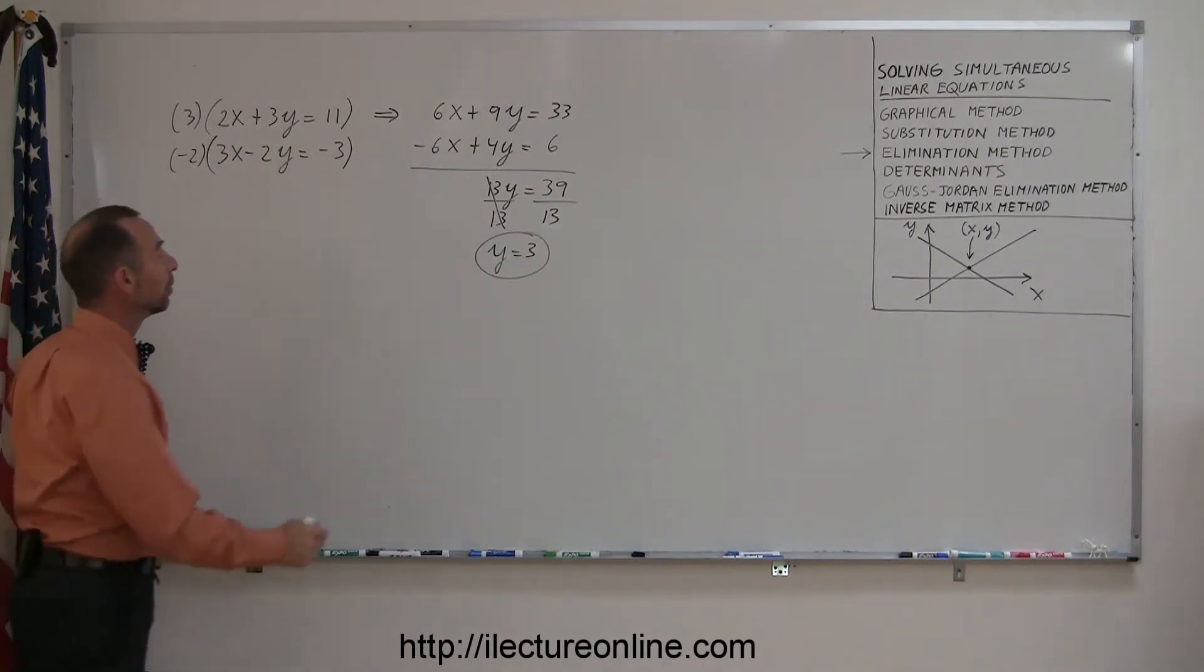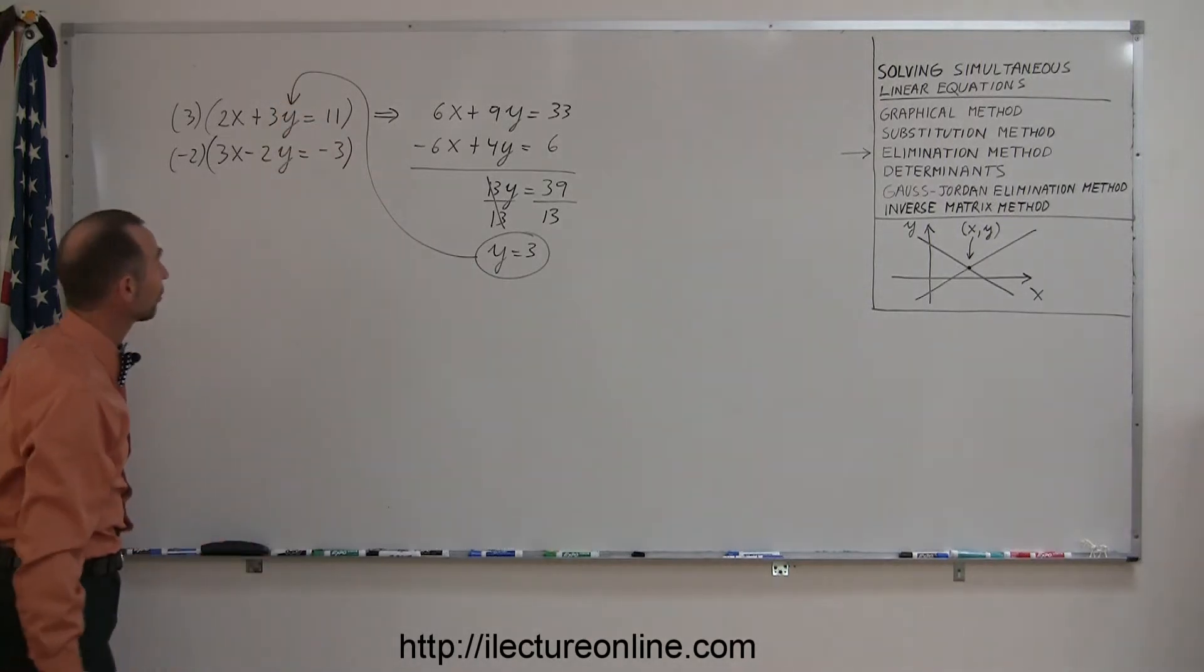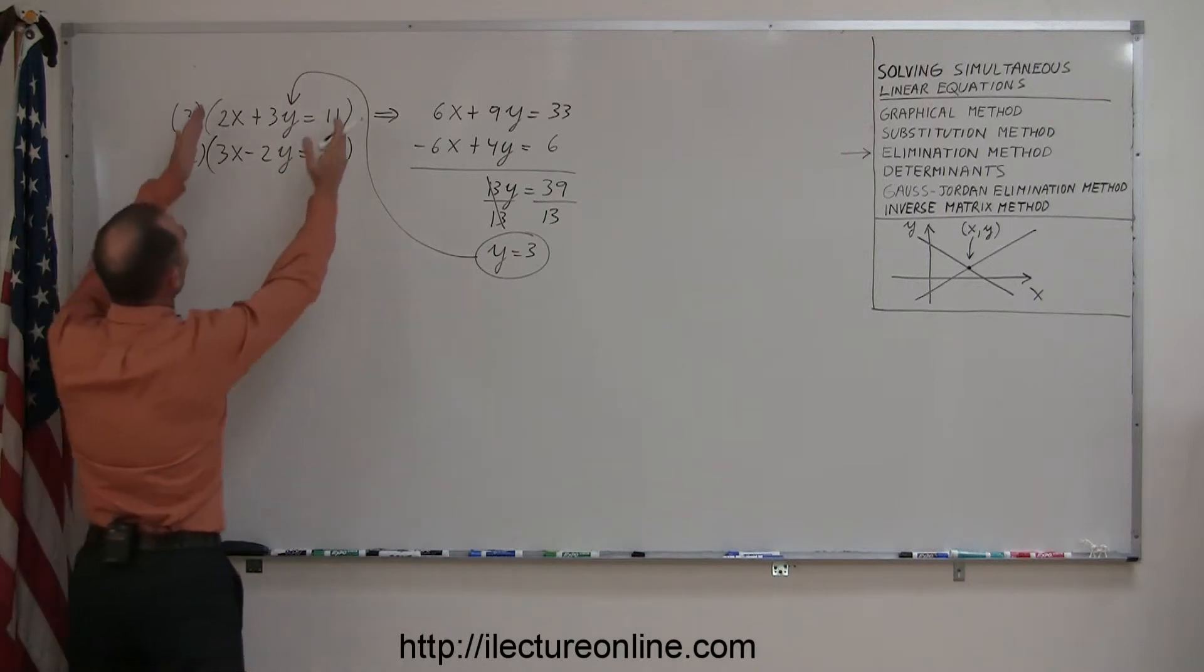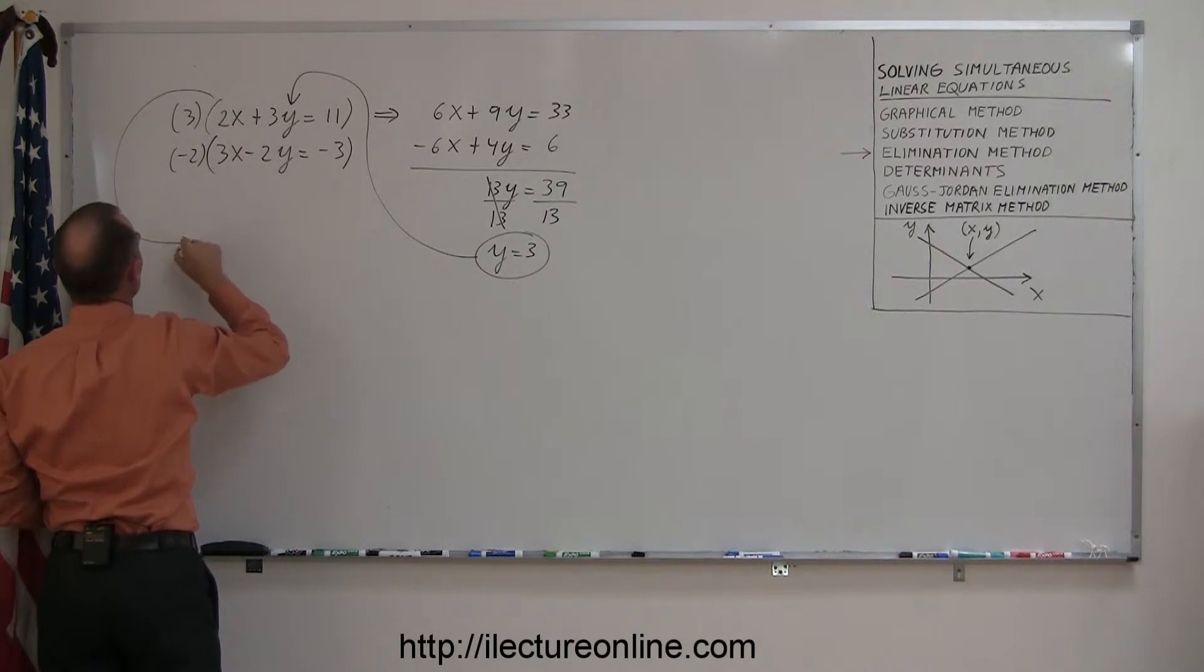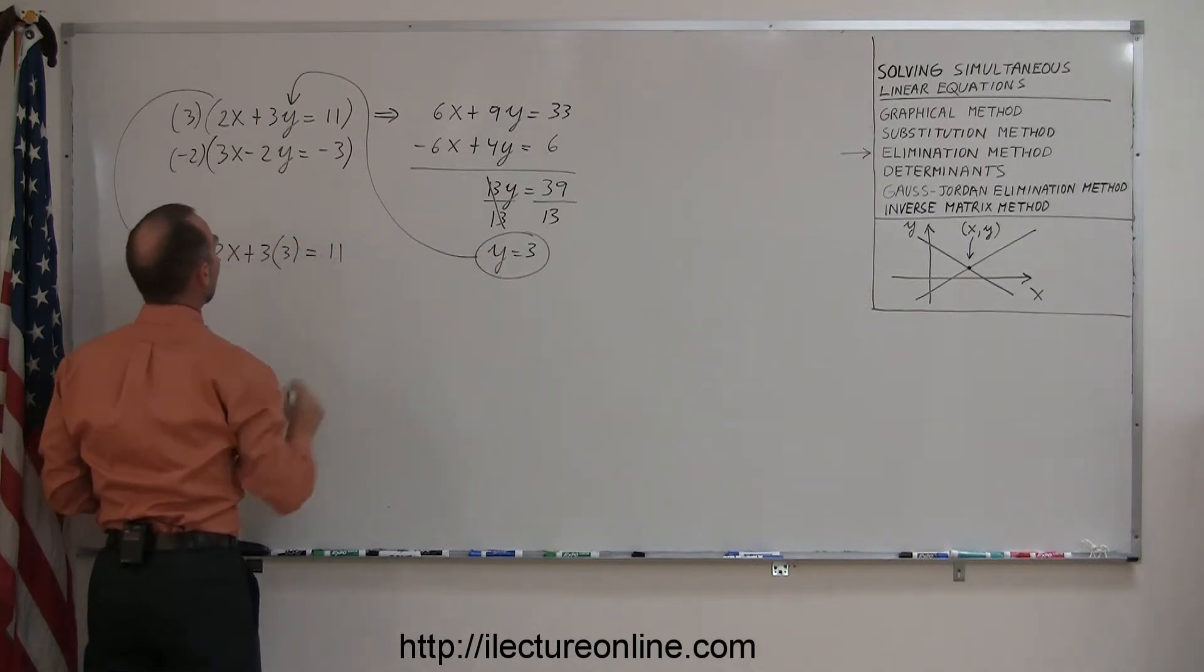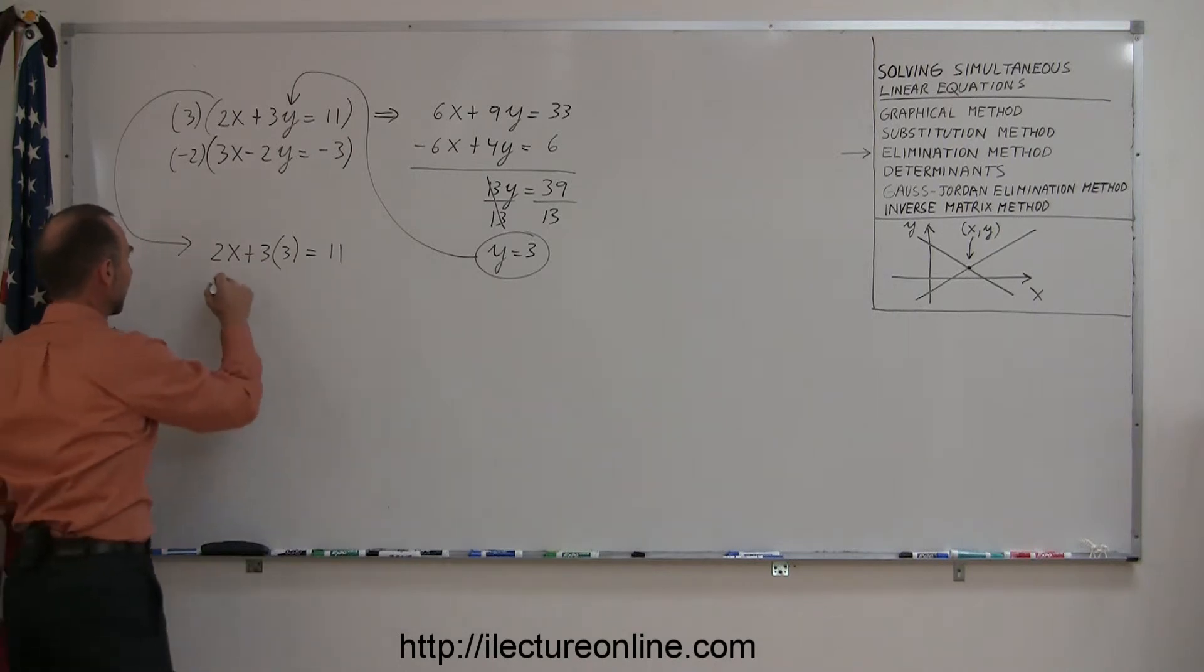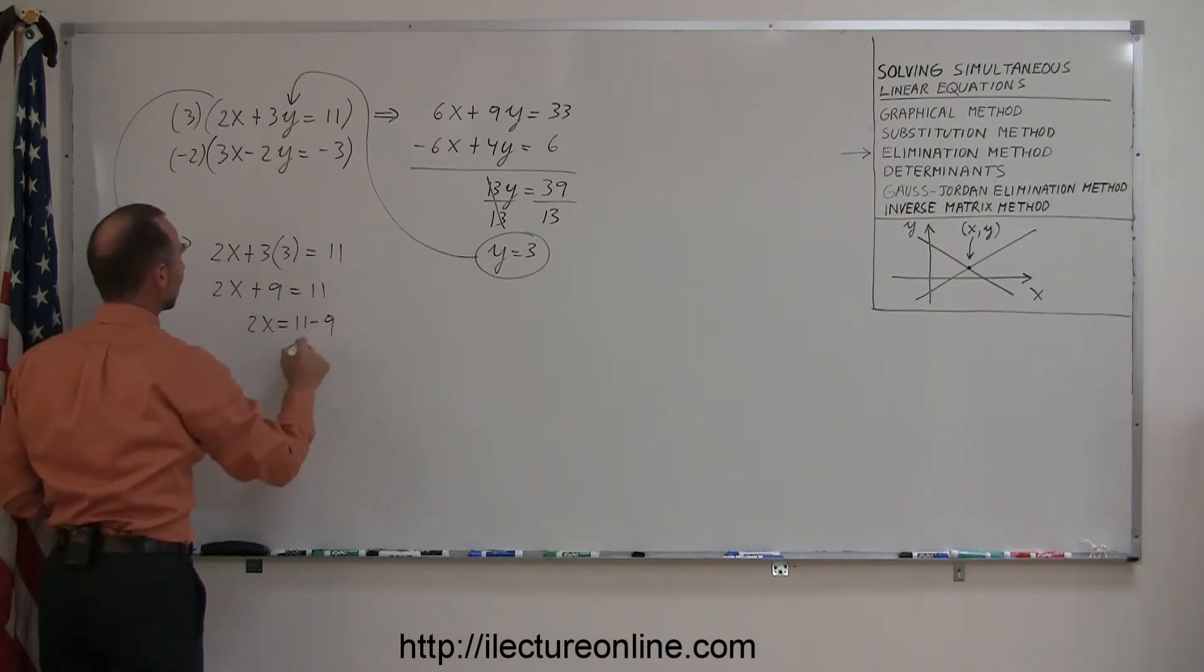Now I'll go ahead and plug that value back into one of my two equations. It really doesn't matter which one, the first or the second. So when I take that equation and plug in 3 for y, I move that equation over here. So I get 2x plus 3 times, instead of y I will write what y is equal to, equals 11. Now I can solve this equation for x. So we get 2x plus 9 equals 11. Moving the 9 across, I get 2x equals 11 minus 9. 2x equals 2. When you divide both sides by 2, I get x equals 1.